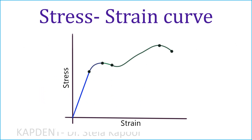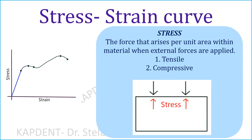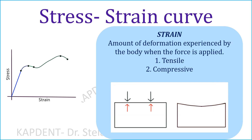This graph on your screen is the stress-strain curve. But let's understand two terminologies first. Stress is the force that arises per unit area within the material when external forces are applied. It can be either tensile or compressive in nature. Strain is the amount of deformation experienced by the body when this force is applied — the relative change in shape — and it can be either tensile strain or compressive strain.